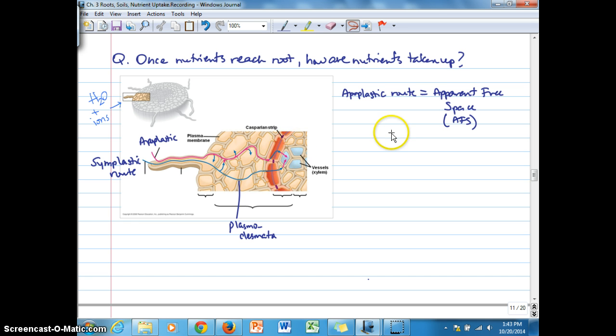An interesting observation about the apparent free space is that there are some characteristics that become apparent when we submerge roots in aqueous solutions. At some point that apoplastic route, the nutrients moving in the apparent free space are blocked by what we talked about before, the Casparian strip.